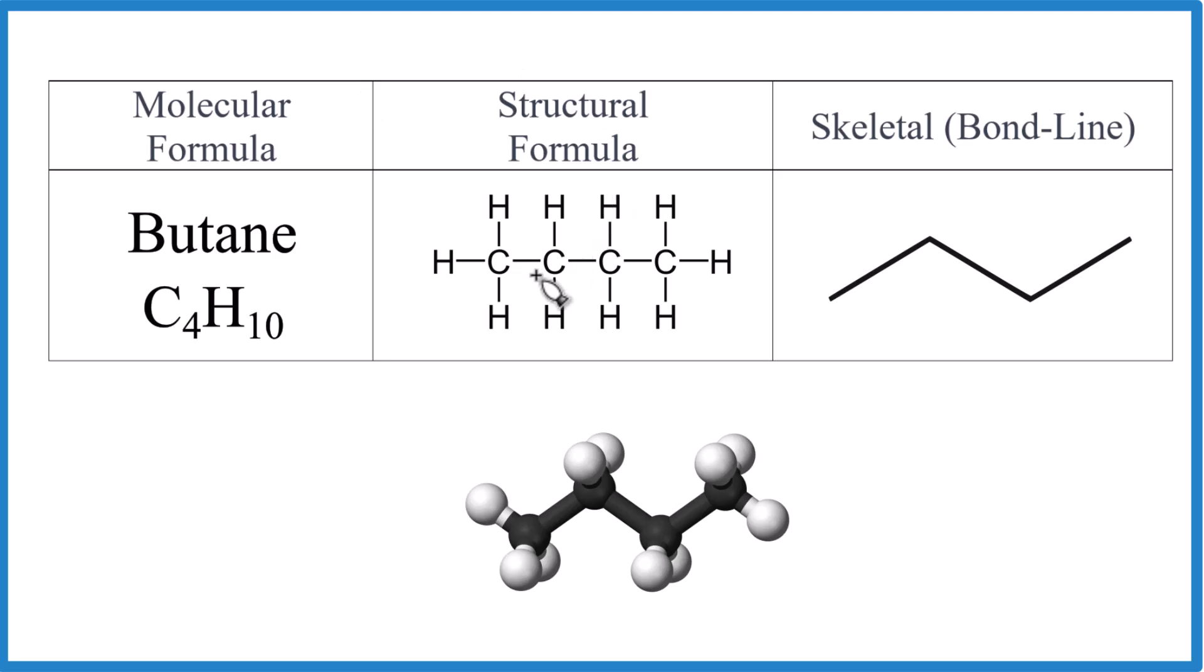The structural formula shows us how they're arranged. So here, for the structural formula, we write all of the carbons and all of the hydrogens. Because it's butane, there won't be any branches, just four carbons in a row.